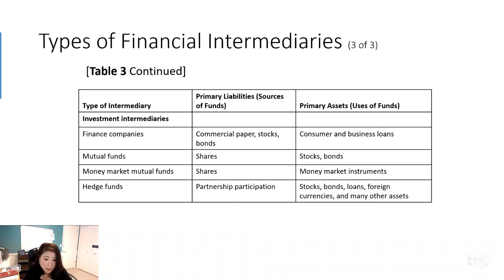The last type is the hedge fund, which is very different from the mutual fund. The main difference is how much money you need to invest. Hedge funds are organized as limited partnerships with a minimum investment ranging from $100,000 — or more typically $1 million or more. So if you invest in a hedge fund, you are very wealthy. Mutual funds, on the other hand, are open to all investors regardless of wealth.